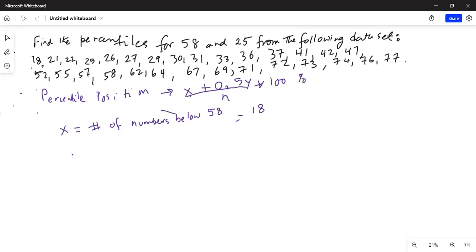And then what is y? So y is equal to how many times 58 occurs. So y is 1 since 58 occurs only once in the data set.